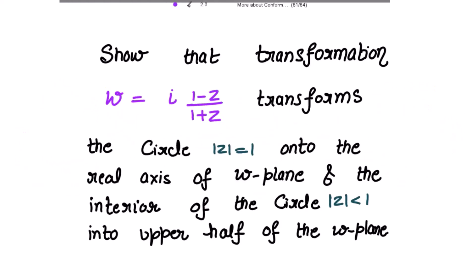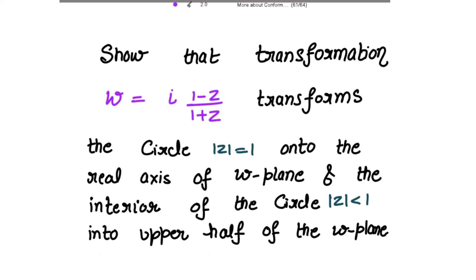We need to show that the transformation w = i(1 - z)/(1 + z) transforms the circle |z| = 1 onto the real axis of the w-plane. If this is the circle |z| = 1, we have to show that the given transformation transforms the boundary of the circle into the real axis, meaning v = 0, and the interior |z| < 1 into the upper half of the w-plane.